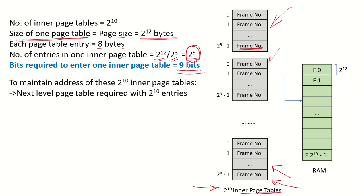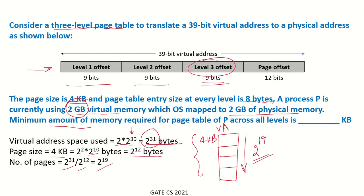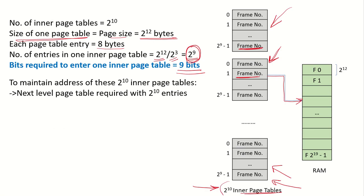The level 3 offset of 9 bits is used for this purpose. Now, there are 2^10 inner page tables, each starting at some frame at a different address. So we need to maintain the addresses of all 2^10 inner page tables.